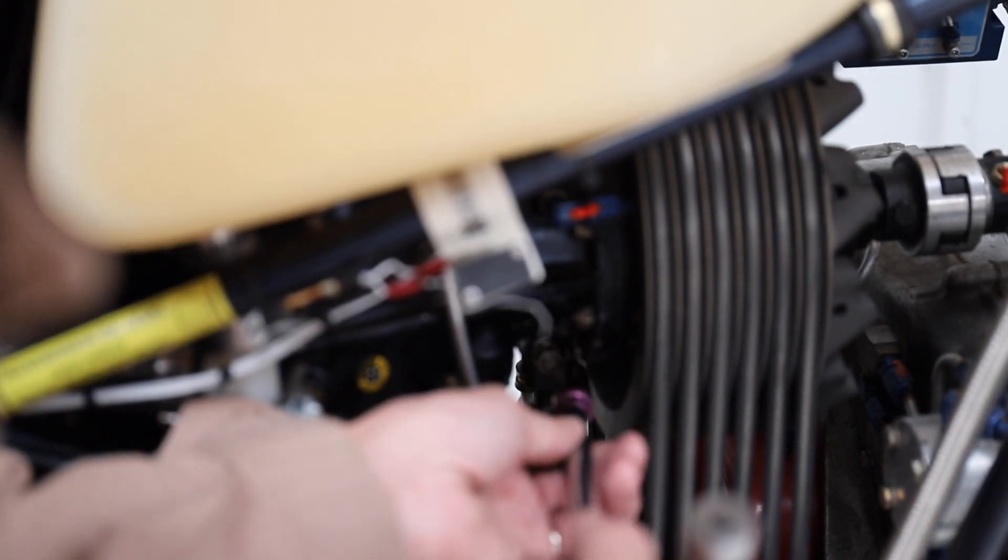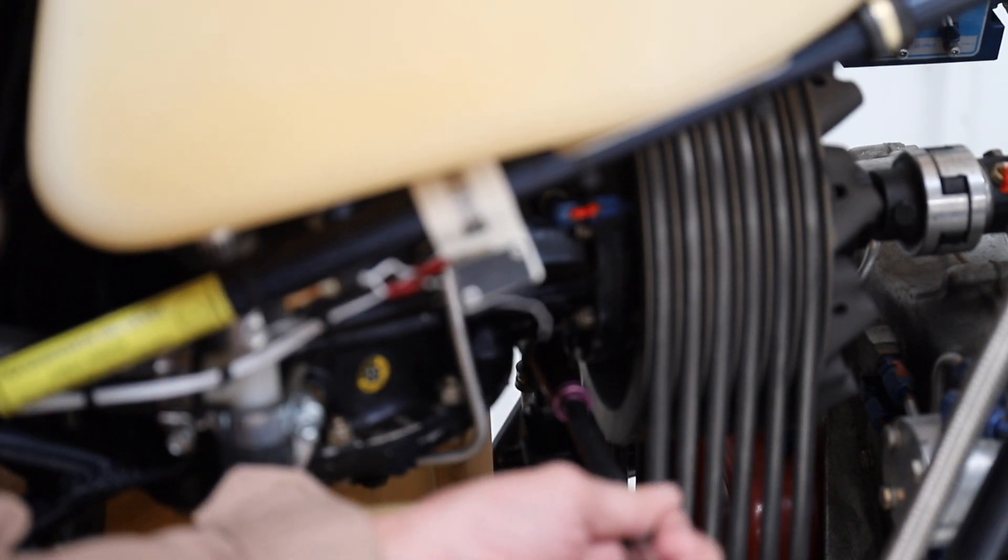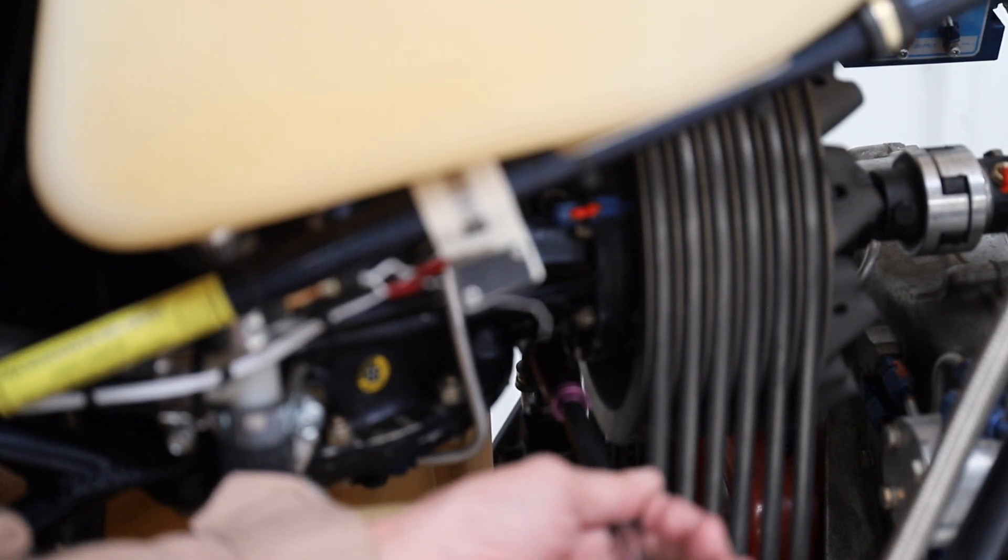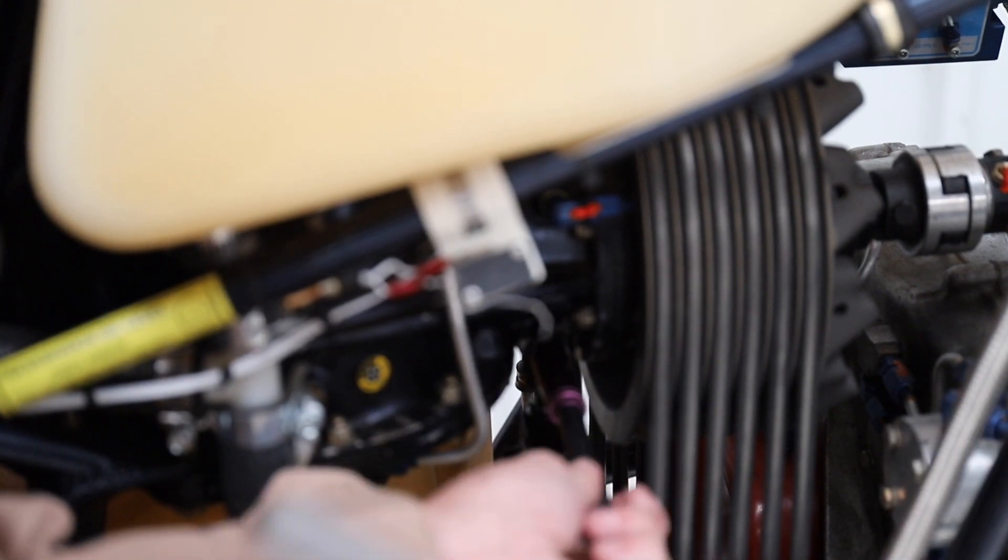Easiest way to accomplish this is just to fully engage the clutch, and now we can reach inside and just remove the nut. You probably won't need a wrench to hold the other side with the clutch engaged.